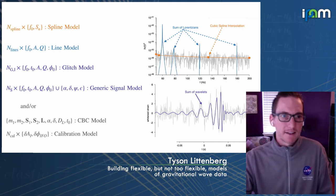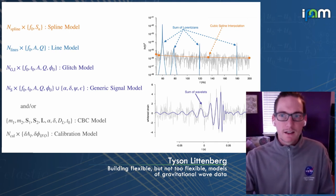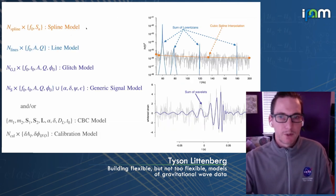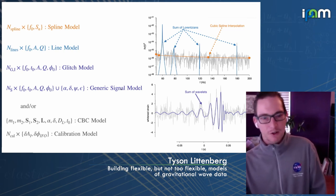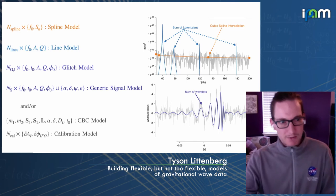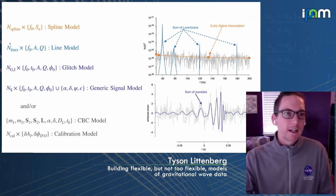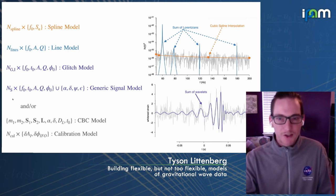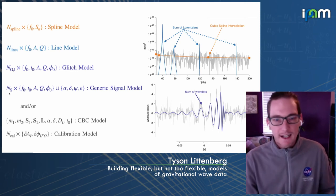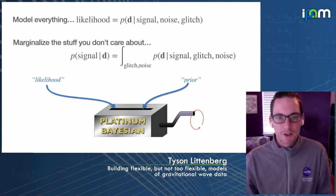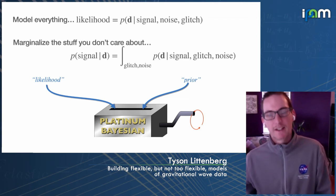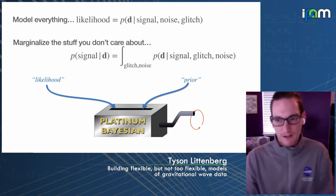Putting it all together, we have lots and lots of parameters: parameters for the broadband noise spline, for the spectral lines, for the glitches, for the signals, and maybe calibration parameters. This massive model has to be shoved into our sampler. A tricky issue is that the actual number of features needed—how many wavelets, how many Lorentzians—also has to be a free parameter. Trying all combinations and comparing evidence afterward leads to overwhelming combinatorics, so we want to marginalize over all these models simultaneously.